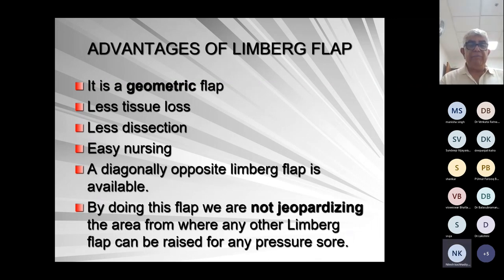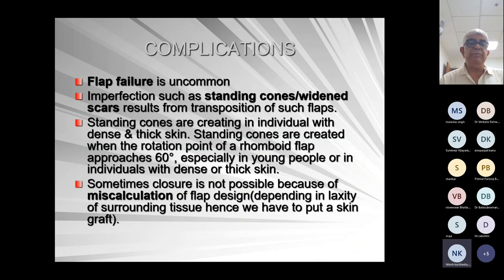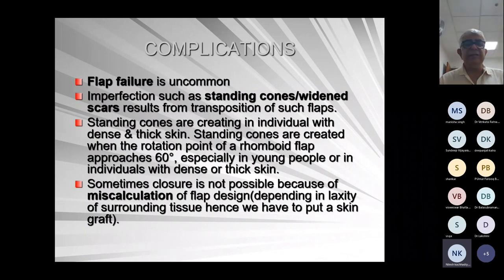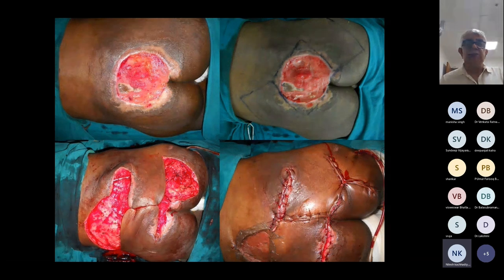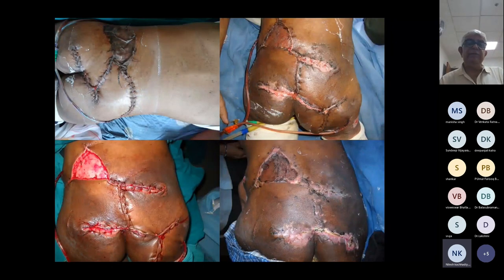By doing this flap, we are not compromising the other Limberg flaps which can be raised from the other two sides. Complications include standing cones and distorting scars, but in paraplegic patients it doesn't matter. Standing cones are created in individuals with dense and thick skin. Sometimes there is a miscalculation in the flap design depending on miscalculation of the eccentricity, and we may have to put a skin graft. This is a case where I miscalculated and suturing was under tension, so one of the flap donor sites was covered with skin graft — and it worked because the skin graft was not on the pressure area.